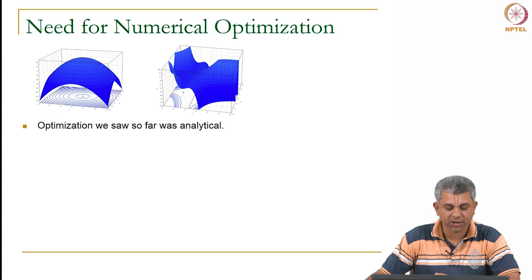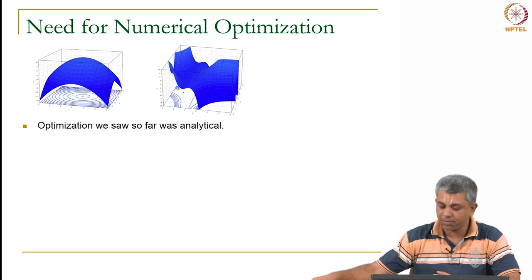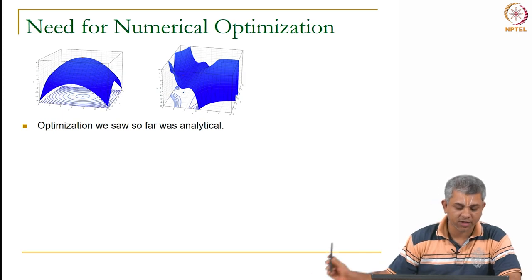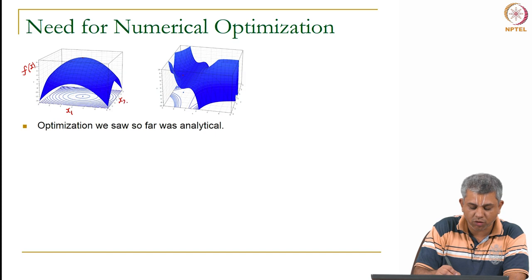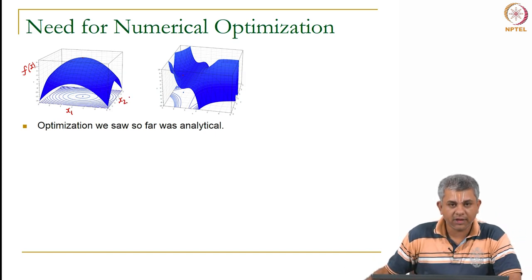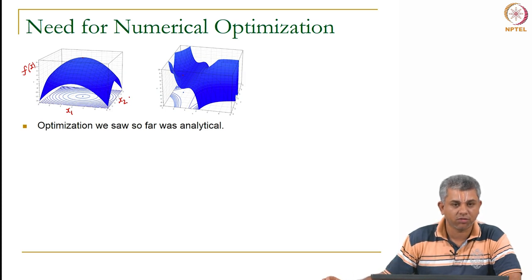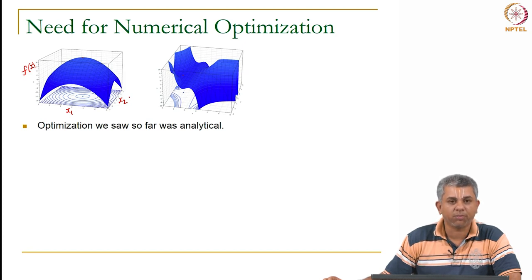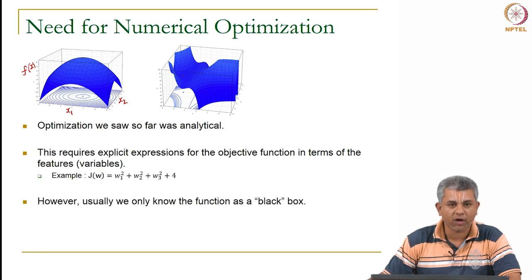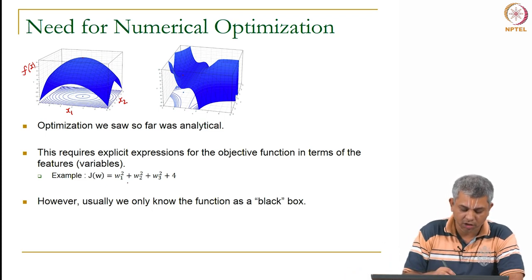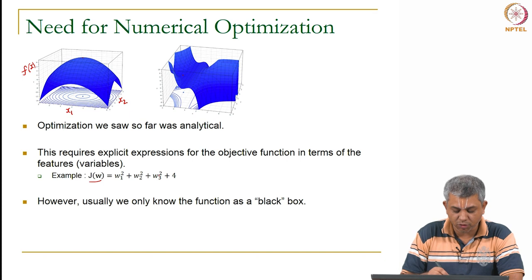So why is it that we need numerical optimization? So far what we were looking at was a case where suppose you have some f of x, and let us say x is a vector with two components x1 and x2. In that case if you knew f of x as an analytical function of x1 and x2, then you could use various ideas such as setting the gradient of f equal to 0, and you have standard methodologies to find out what the appropriate minimum or maximum is. However, most of the time what happens is we do not have explicit expressions — so you do not really know what f is. An explicit expression would be something of the sort: j of w is w1 square plus w2 square plus w3 square plus 4.